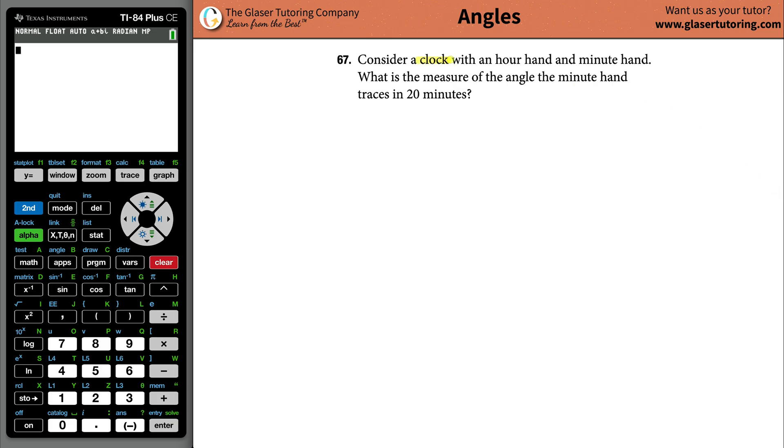Number 67: Consider a clock with an hour hand and minute hand. What is the measure of the angle the minute hand traces in 20 minutes? Okay, so let's draw a little clock. All right, so here's your clock.